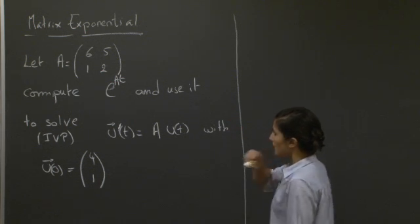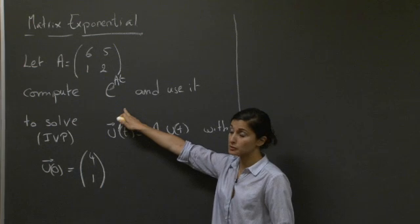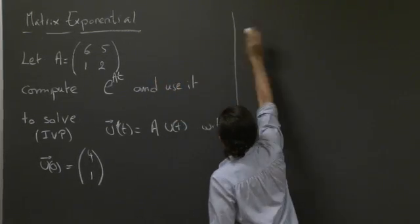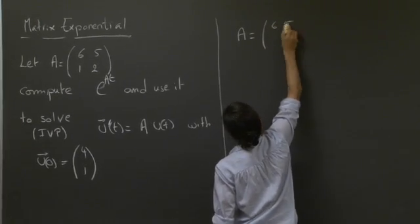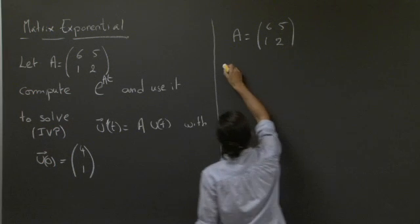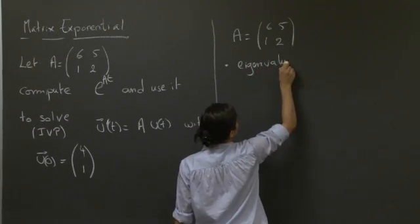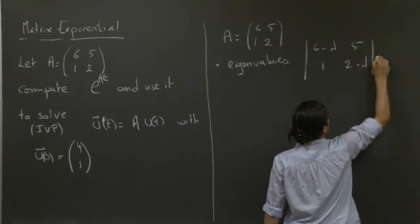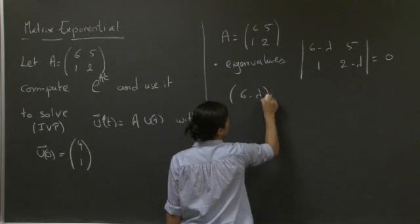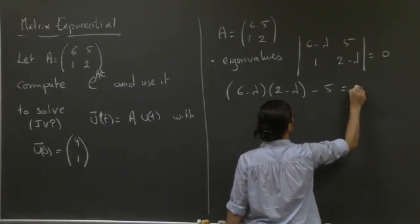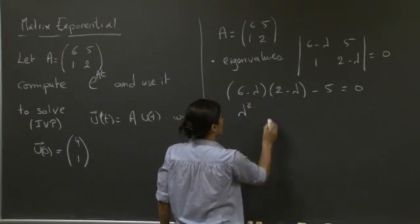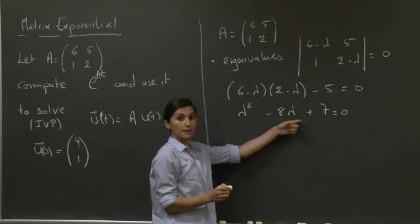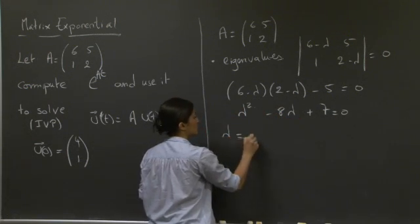Welcome back. To compute the matrix exponential, we need to identify the eigenvalues of matrix A and its eigenvectors. The eigenvalues are solutions of (6-λ)(2-λ) - 5 = 0, which gives us λ² - 8λ + 7 = 0. You can verify that the two eigenvalues are 1 and 7, so λ₁ = 1 and λ₂ = 7.